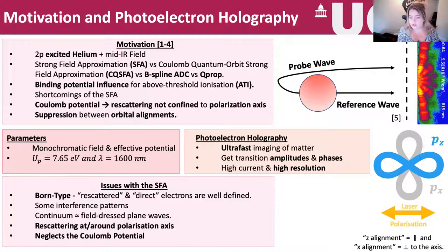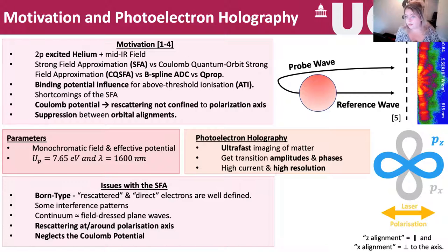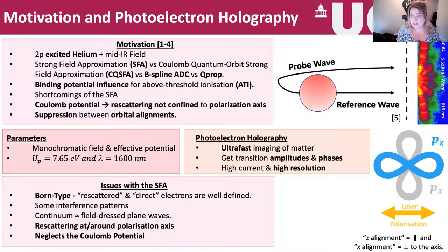Now let's move on to photoelectron holography. What is photoelectron holography? It's ultra-fast imaging of matter. You can get transition amplitudes and phases and high-resolution images. Here we have the probe wave and the reference wave, which give us these images. Here you have a PMD — a photoelectron momentum distribution — which we use throughout this work. This distribution is actually experimental data, which is wonderful because you can approach this both theoretically and experimentally.